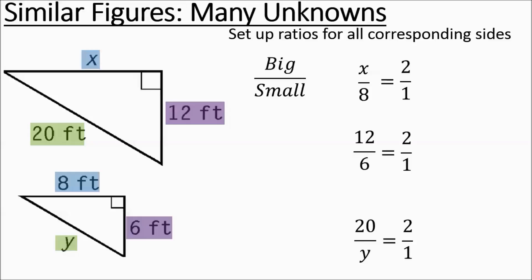To figure out the X, we can do the 8 times 2 divided by 1. We get 16. We can also do 20 times 1 divided by 2 for the bottom one to figure out Y. And we get 10 feet. And that's it. You're good to go.